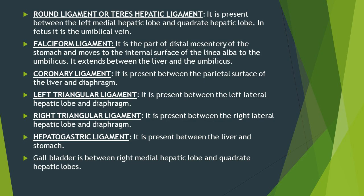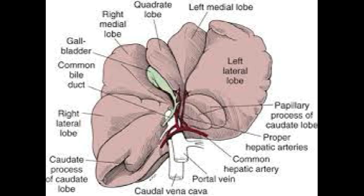The coronary ligament is present between the parietal surface of the liver and diaphragm. Between the left lateral hepatic lobe and diaphragm there is a left triangular ligament, and between the right lateral hepatic lobe and diaphragm is the right triangular ligament. There is another ligament called the hepatogastric ligament, present between the liver and stomach. The gallbladder in case of dog is present between the right medial hepatic lobe and quadrate hepatic lobe.